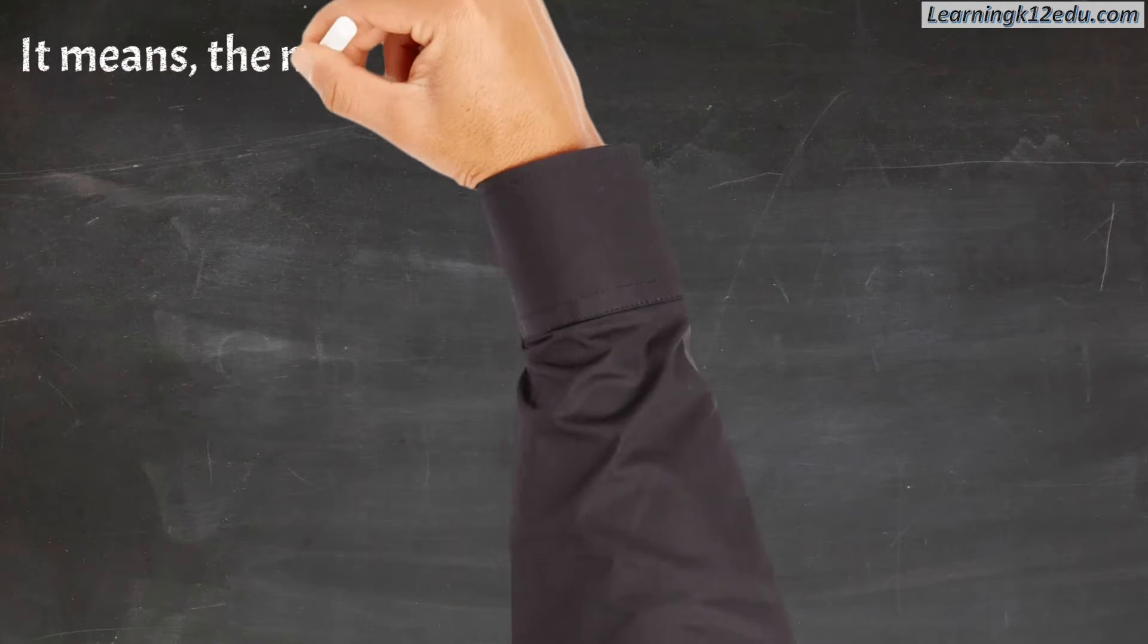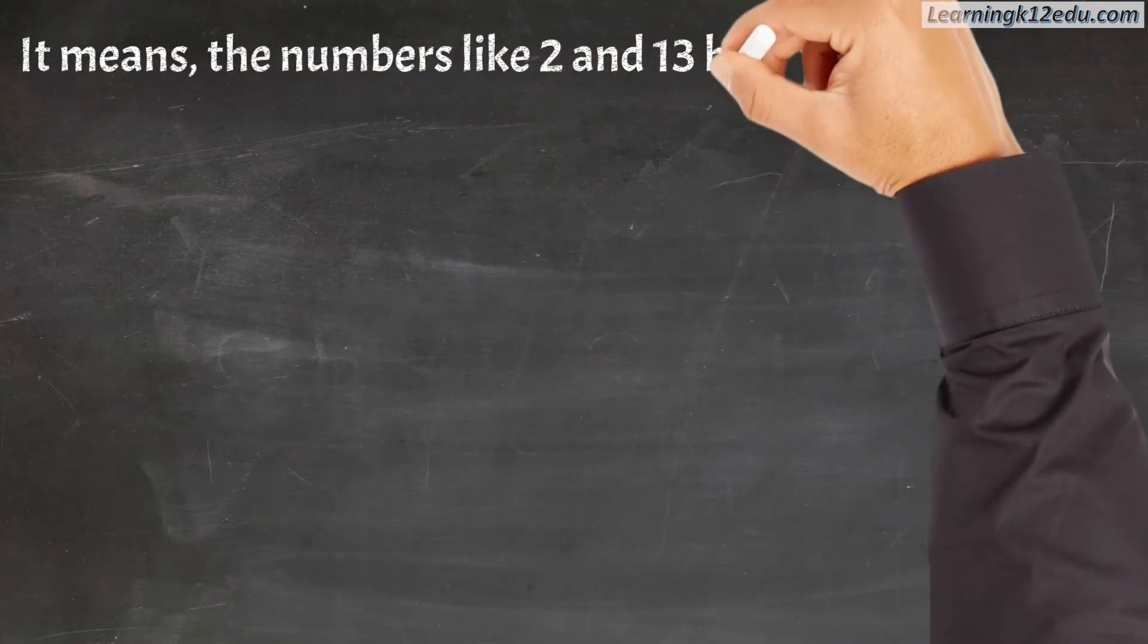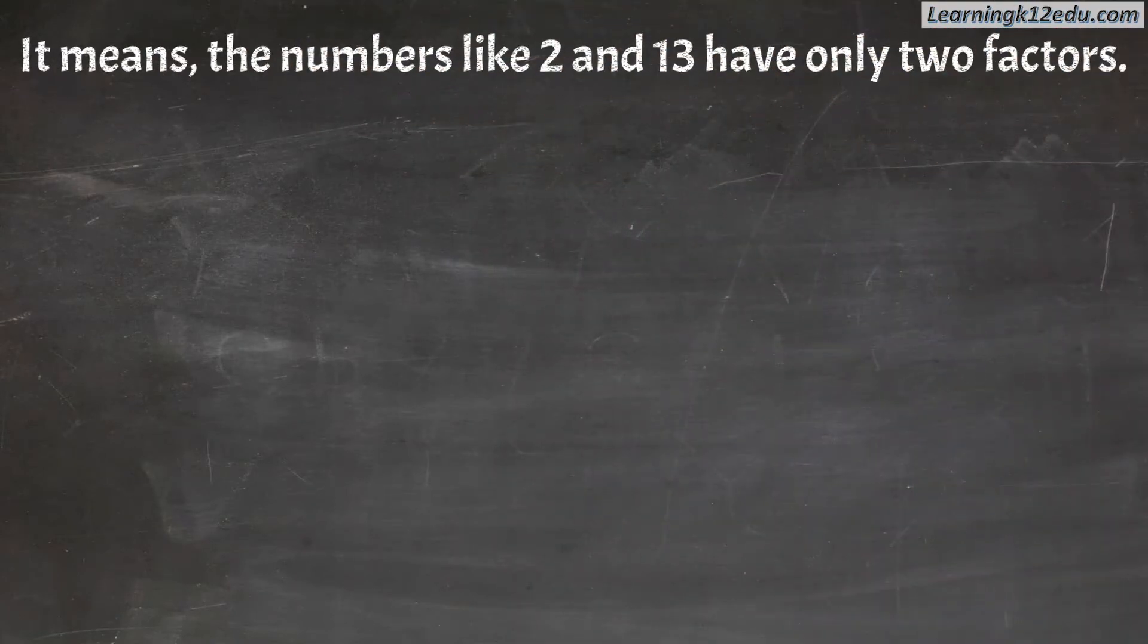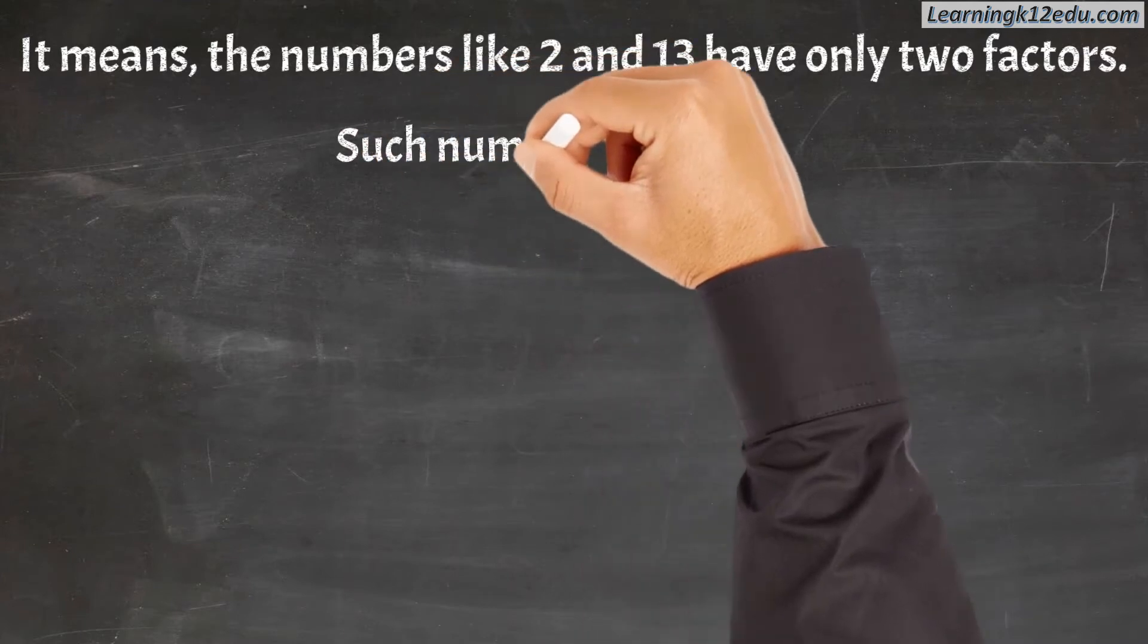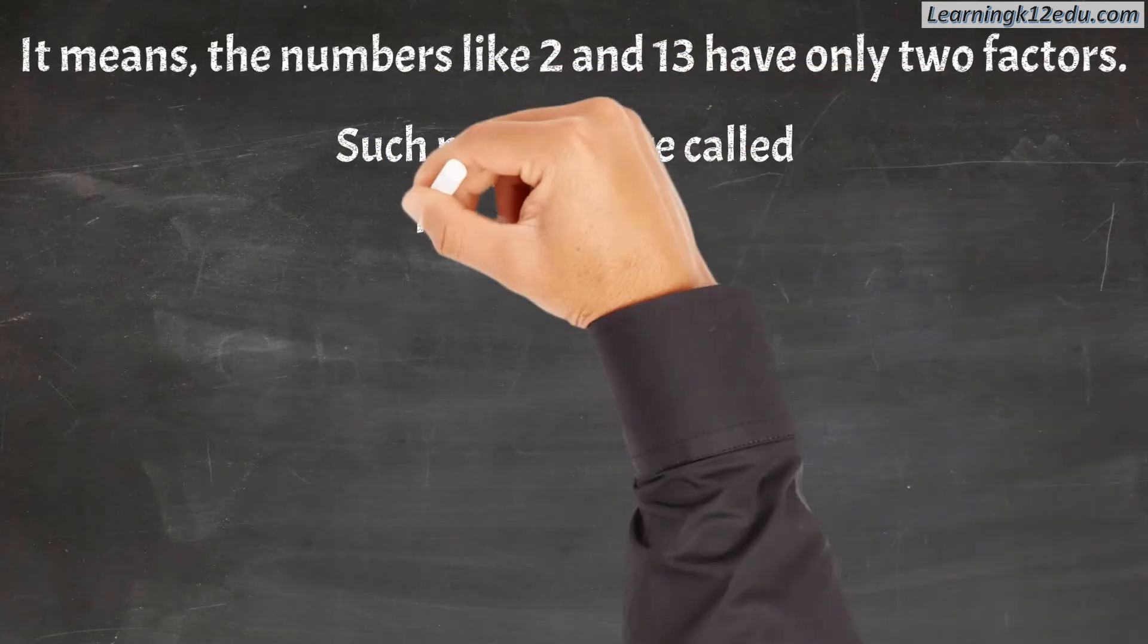This means numbers like 2 and 13 have only two factors. Such numbers are called prime numbers.